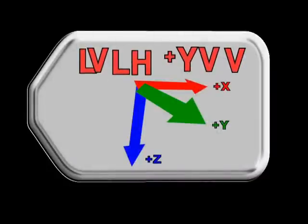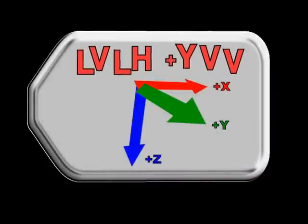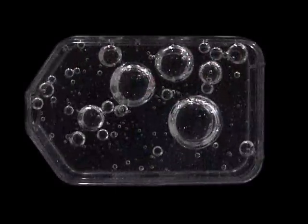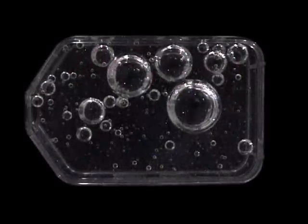Here we're in local vertical local horizontal with the flask in a different orientation, plus Y in the velocity vector. And now the bubbles predominantly move in the upward direction.